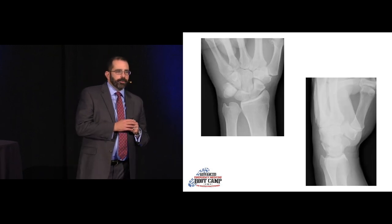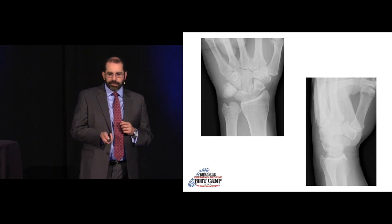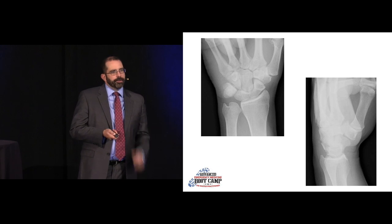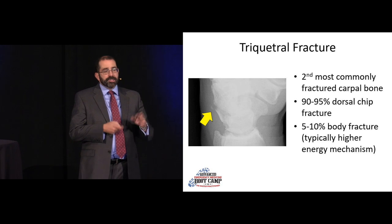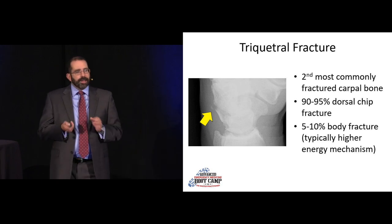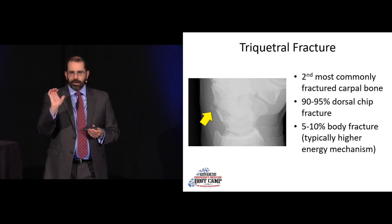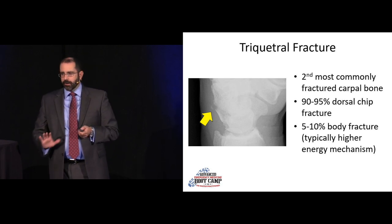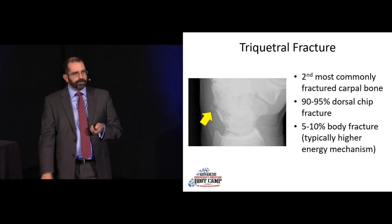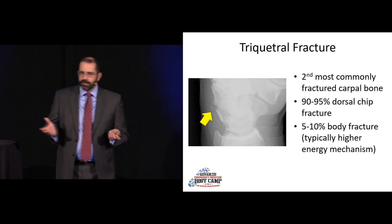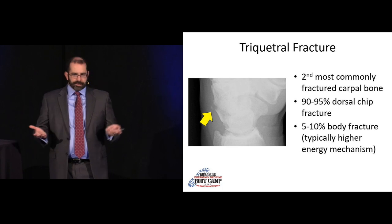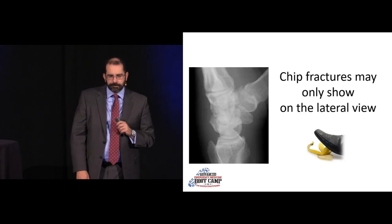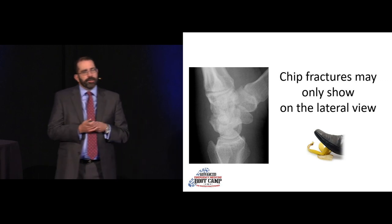Another FOOSH with wrist pain: the AP film looks pretty good, nothing obvious, but on the lateral we see a little fleck — that's a classic triquetral fracture. It's a tiny little chip fracture, most commonly from a FOOSH. It's the second most commonly fractured carpal bone. The vast majority — 90 to 95% — are these dorsal chip fractures, likely from the ulnar styloid chipping off that piece during hyperextension. The remaining 5 to 10% are body fractures, which tend to be higher energy with associated injuries.